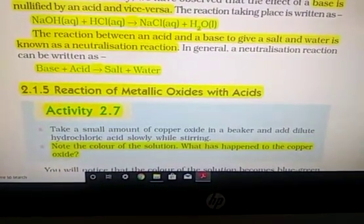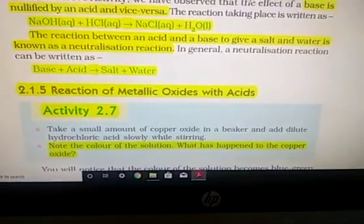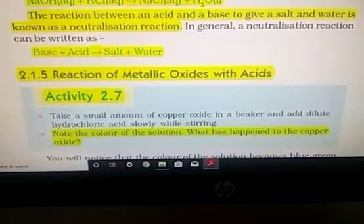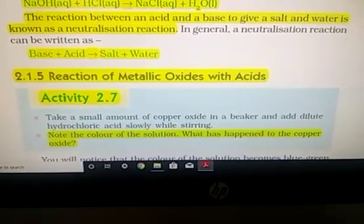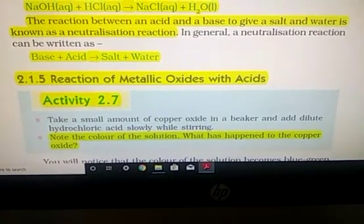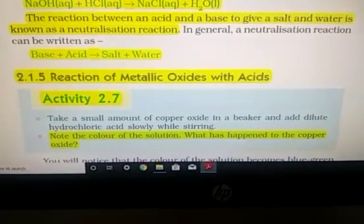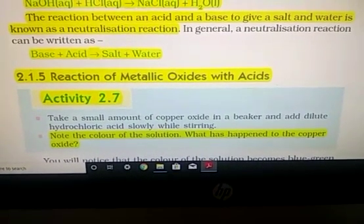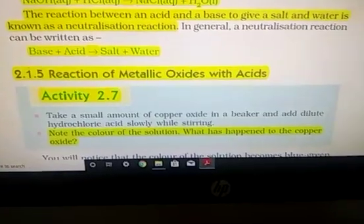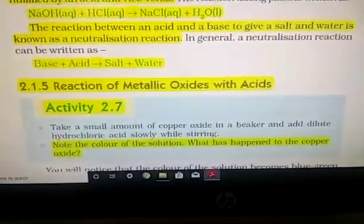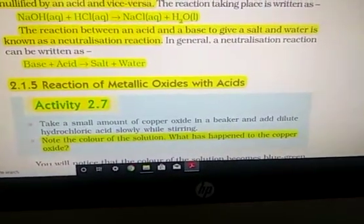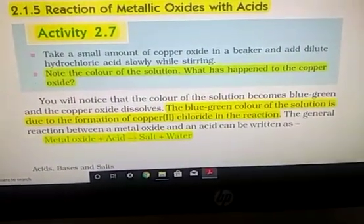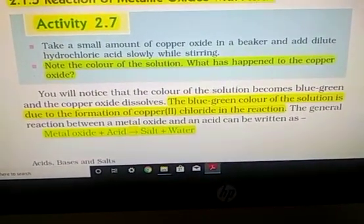Now, reaction of metal oxides with acids. For this we do activity 2.7. We take copper oxide. Copper oxide is black in color. We add dilute hydrochloric acid to it and slowly mix by stirring. You will note the color of the solution start to change and it becomes bluish green color. It is formed due to the formation of copper chloride. Copper chloride, copper second chloride.